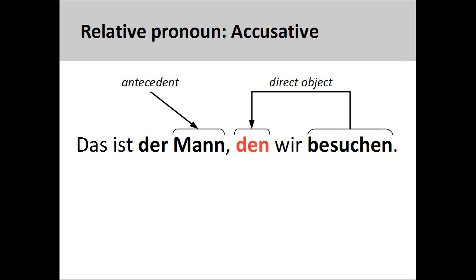In the sentence "das ist der Mann, den wir besuchen" (that is the man whom we visit), the relative pronoun is in the accusative case. The reason for this is that the pronoun is the direct object of the verb "besuchen" (visit) and receives the action of this verb. In this slide, you can see clearly that the gender and number of the relative pronoun — masculine singular — is determined by the antecedent, but that the case, accusative, is determined by the function of the pronoun in the relative clause.